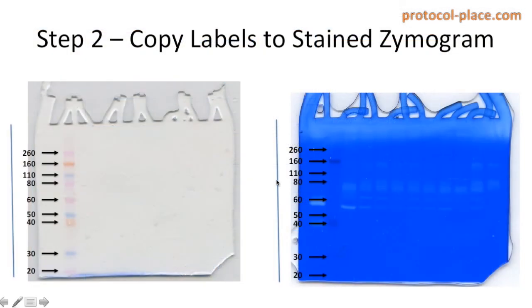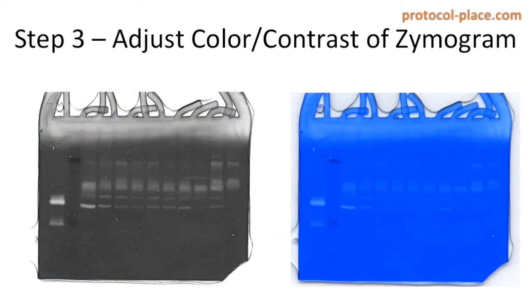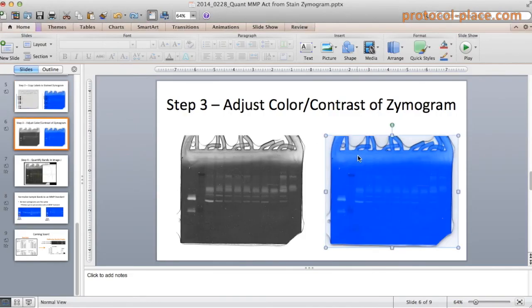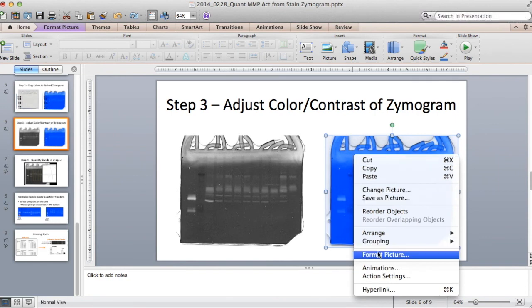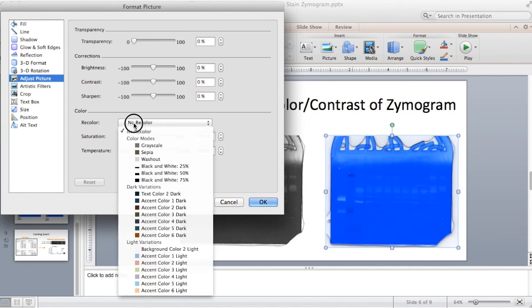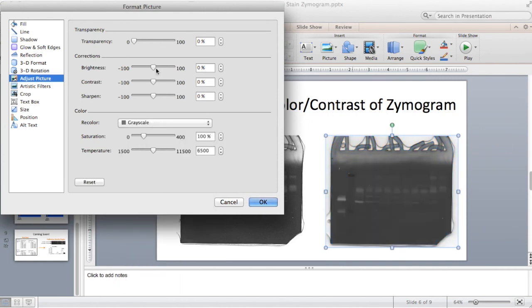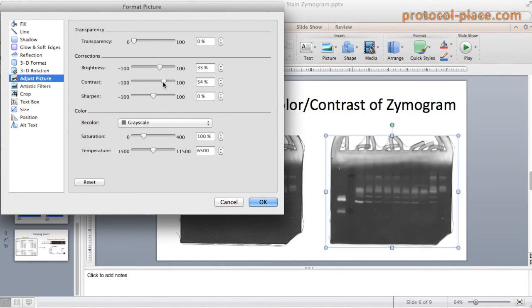Now that we have a way to identify what each of the MMPs in these bands of activity should be, the next step is to try to optimize our image a little bit. You can do that by adjusting the brightness and contrast settings of this image. I also like to change it from color to grayscale, which makes the bands of activity pop out a little bit. To do that, right-click on the image and click Format Picture — from there you can recolor the image and adjust the brightness and contrast settings, using your best judgment to make the bands of activity stand out against their background.